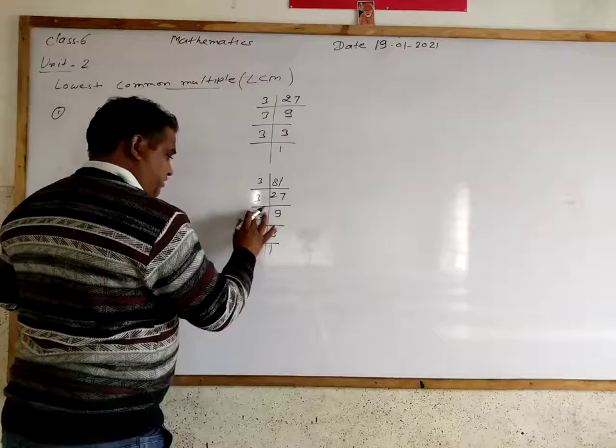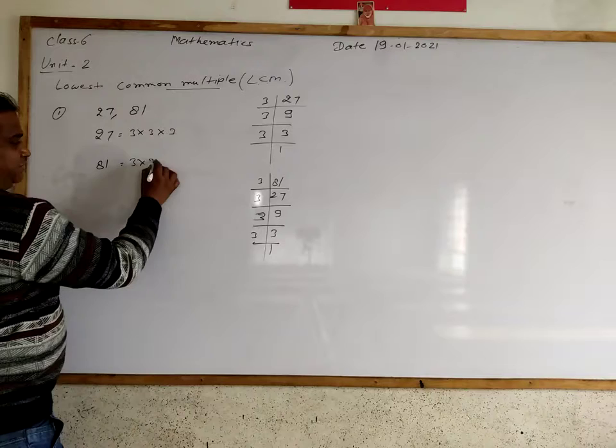Now 27. Again divide by 3, we get 9. Divide by 3, we get 3. Again divide by 3, we get 1.